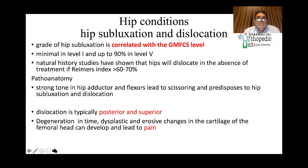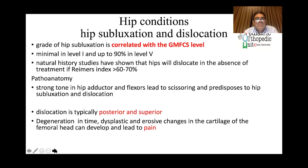Hip subluxation and dislocation in CP is a very important issue. It is directly correlated with the GMFCS level — very common in non-ambulatory children and very rare in ambulatory children. In level 5, it reaches about 90% of children. In level 1, it is very rare. The natural history shows that if the Reimer Migration Index reaches 60–70%, it will progress to frank dislocation.